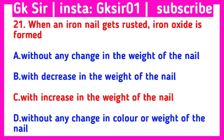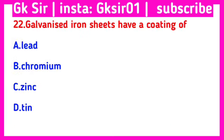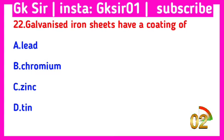Question number 22. Galvanized iron sheets have a coating of — Option A: lead, Option B: chromium, Option C: zinc, Option D: tin. The correct answer is Option C: zinc.